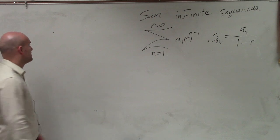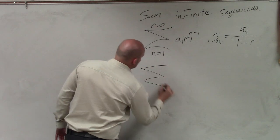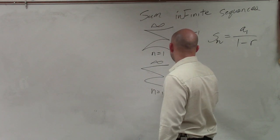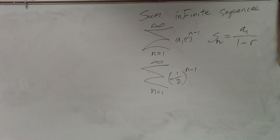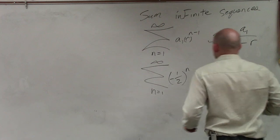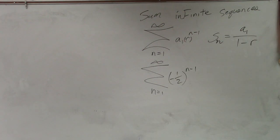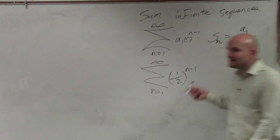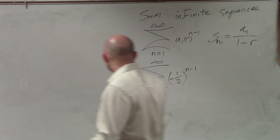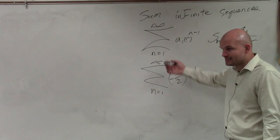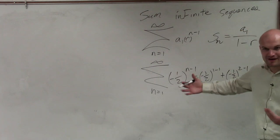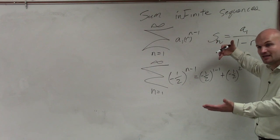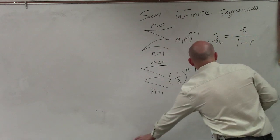Now let's work through a problem. Let's say I have sigma from n equals 1 to infinity of negative one-half raised to the n minus 1. Here's my sigma notation. If I want to evaluate this, I could just plug in my numbers — negative one-half raised to the 1 minus 1, plus negative one-half raised to the 2 minus 1 — that's how we did it for finite series. But let's just plug in what we know for the formula.